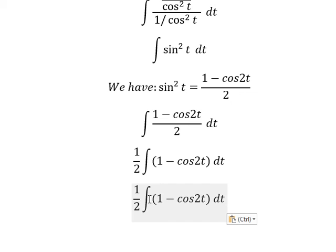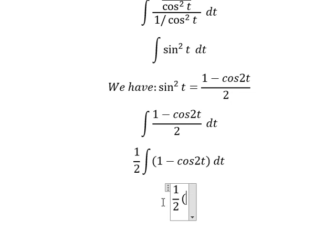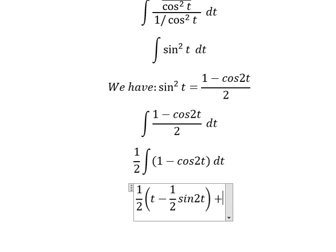The integration of 1 we have t. The integration of cos 2t we have 1 over 2 times sin 2t. And I will put c.